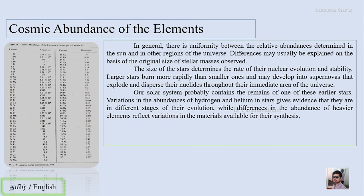Our solar system probably contains the remnants of one of these alien stars. Variations in the abundance of hydrogen and helium in stars gives evidence that they are in different stages of their evolution. The differences in abundance of heavier elements reflects the variation in the material that is available for synthesis.